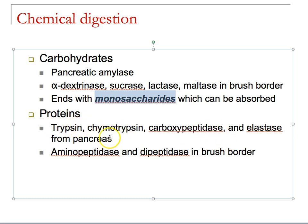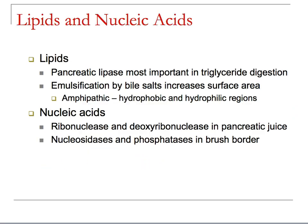For proteins, trypsin, chymotrypsin, and carboxypeptidase come from the pancreas itself, while aminopeptidase and dipeptidase are at the brush border — we need to break down all the proteins in, say, a piece of steak into amino acids or dipeptides. Pancreatic lipase is most important for triglyceride digestion; bile salts increase the surface area via emulsification so pancreatic lipase can act. Ribonuclease and deoxyribonuclease come from pancreatic juice; nucleosidases and phosphatases are at the brush border.